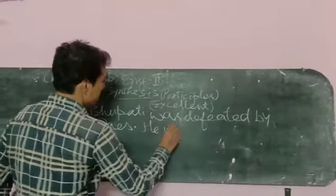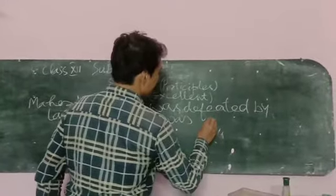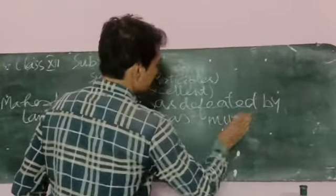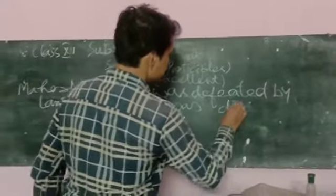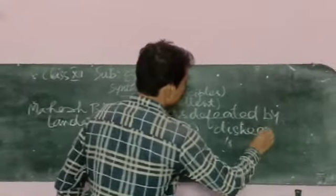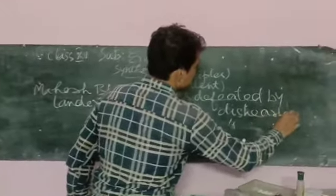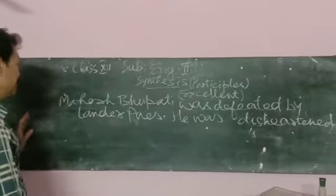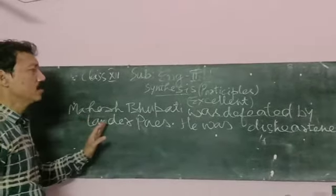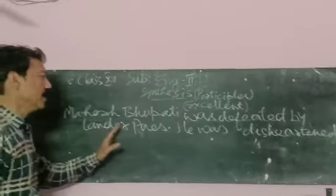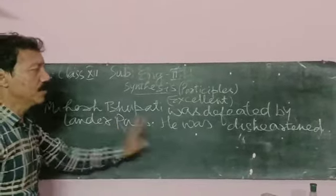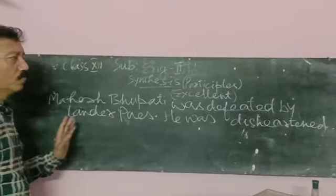He was much upset, he was disheartened. Disheartened. Now the book is not but my opinion was coming out logically clear. So Mahesh Bhupati was defeated by Lender Pace. A sentence after this, Mahesh Bhupati, Lender Pace, he was disheartened.